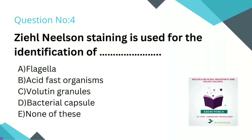The cell wall contains micolic acid, which confers the property of acid-fastness. Acid-fast staining stains bacterial cells, and the micolic acid prevents decolorization, making the organism retain the stain. Acid-fast organisms are demonstrated using the Ziehl-Neelsen staining method.